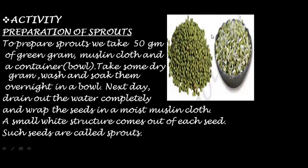This is considered a healthy food item and should be included in your food habits. Let's see how to prepare sprouts. To prepare sprouts, we take 50 grams of green gram or bengal gram, a muslin cloth and a container or bowl. Take some dry gram, wash and soak them overnight in a bowl. Next day, drain out the water completely and wrap the seeds in a moist muslin cloth. A small white structure comes out of each seed — such seeds are called sprouts.